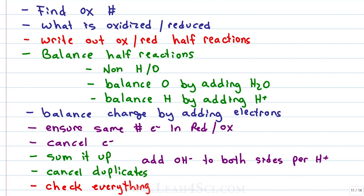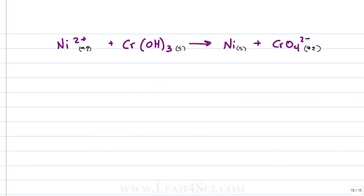But enough hypotheticals, let's see what this looks like in a practice problem. Let's take a look at this example where we want to complete and balance the reaction under basic conditions. Ni2+ aqueous reacts with Cr(OH)3 solid to give us Ni solid plus CrO4 2- aqueous.